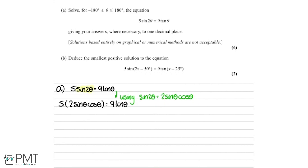The equation is quite busy — we've got sinθ, cosθ, and tanθ. To simplify, I'm going to replace tanθ with sinθ over cosθ. Then we can rewrite this, multiplying out the bracket at the same time.